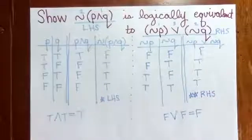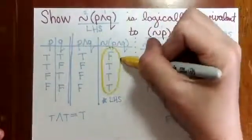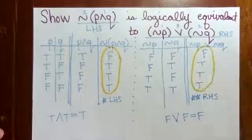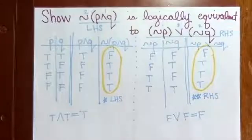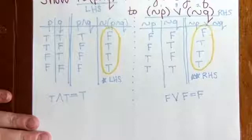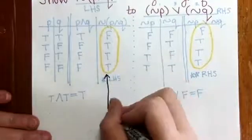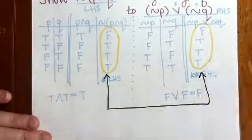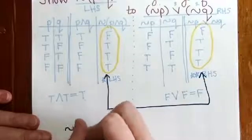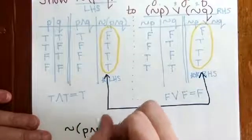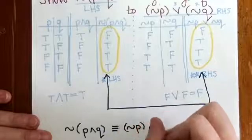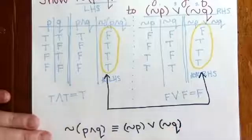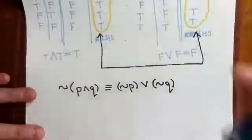Now you can see that the truth table results for each statement is the same, F T T T. Because the truth table results match, we can conclude that NOT (P and Q) is logically equivalent to NOT P or NOT Q. These two statements are logically equivalent.